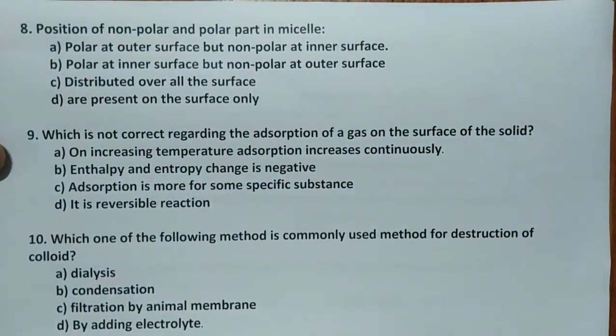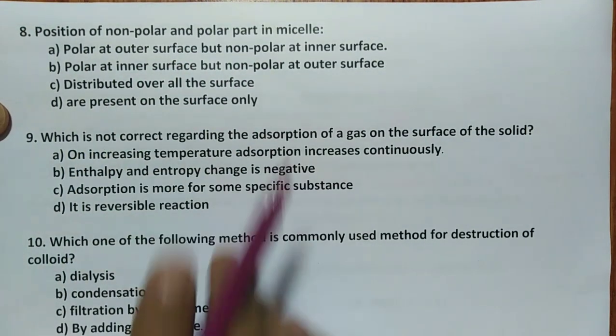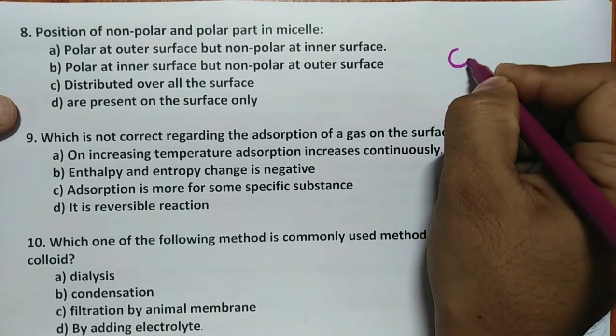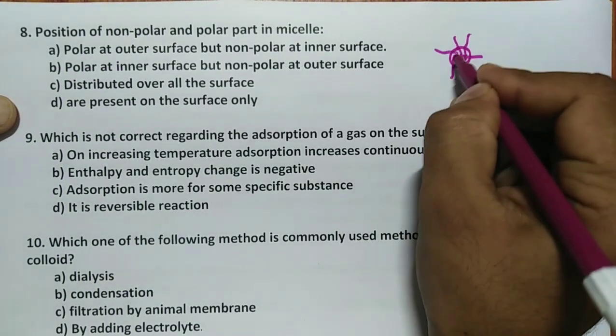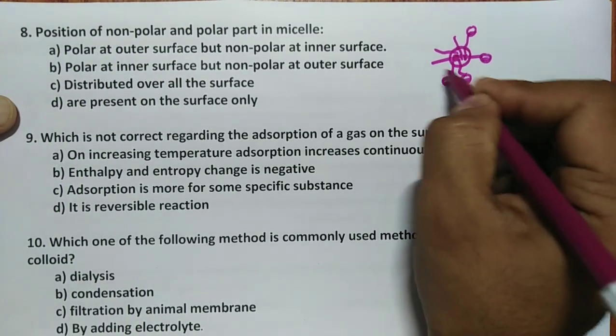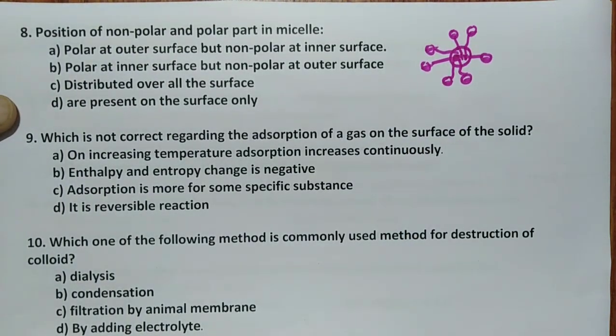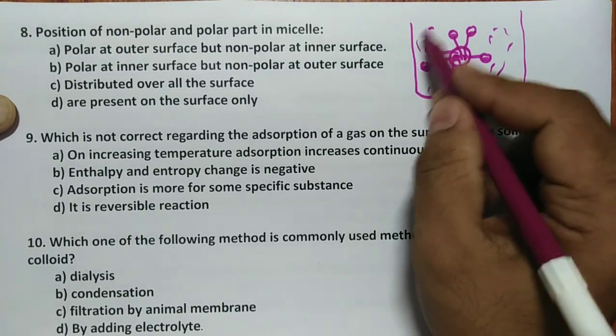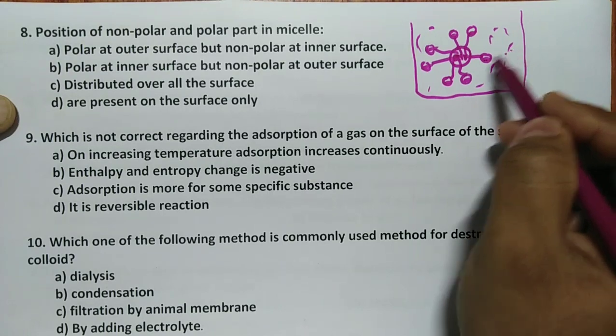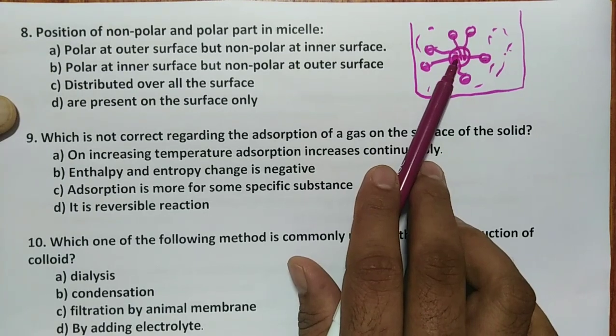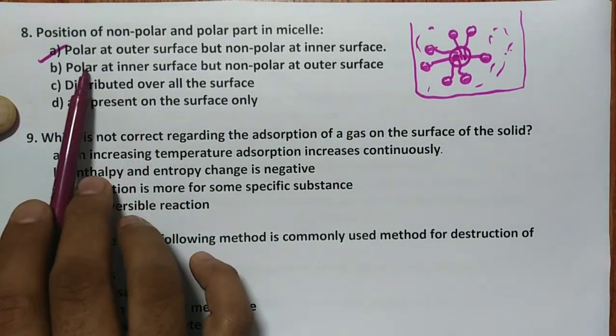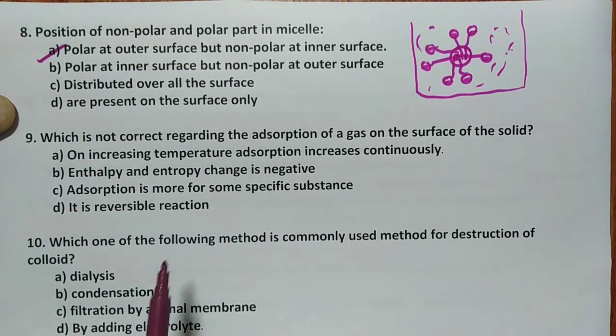Eighth question: position of polar and non-polar part in the micelle. Micelle is like this - inside air will be there and outside water will be there. All polar part will be outside the surface and inner surface will have non-polar part. This is present in water. So surrounding water is there, hence water and polar interaction will be more, non-polar water is hydrophobic interaction. Polar at outer surface but non-polar at inner surface is correct statement, hence answer should be A.